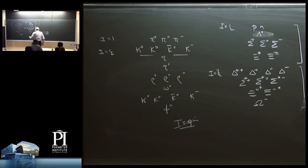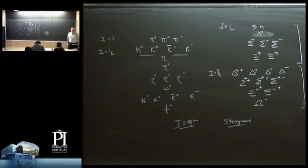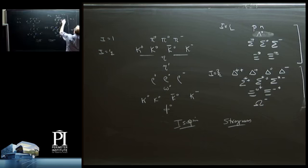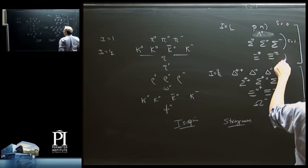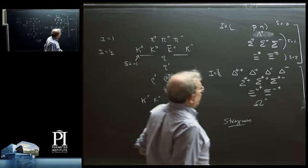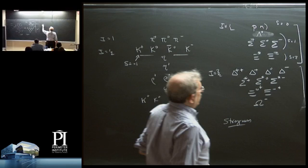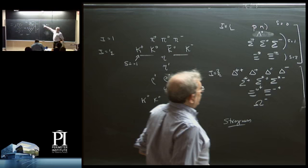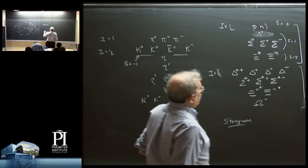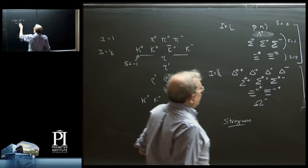There's one more quantum number called strangeness. Strangeness was observed to be conserved in strong interaction reactions. The particles up here have strangeness 0, these have strangeness 1, and these have strangeness 2. The K-plus has strangeness minus 1. So a reaction you would see is, for example, pi-plus and a neutron going to a sigma-plus and a K-zero. These particles have zero strangeness; the sigma-plus has strangeness 1, and the K-zero has strangeness minus 1, being in the same isospin multiplet.